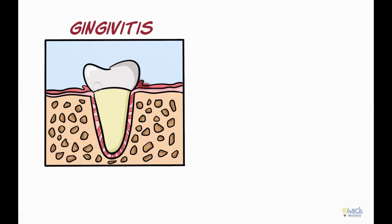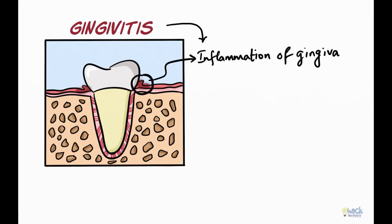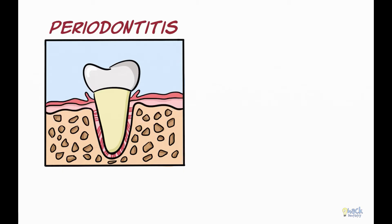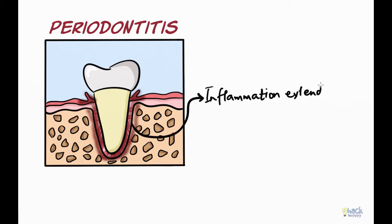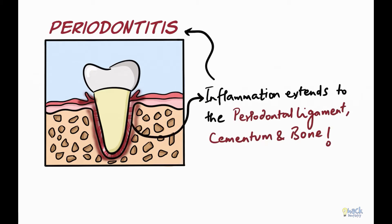Gingivitis refers to the inflammation of soft tissue surrounding the teeth. Inflammation in gingivitis is restricted to the gingiva, unlike periodontitis, where inflammation extends to other periodontal tissues like the periodontal ligament, cementum, and alveolar bone.